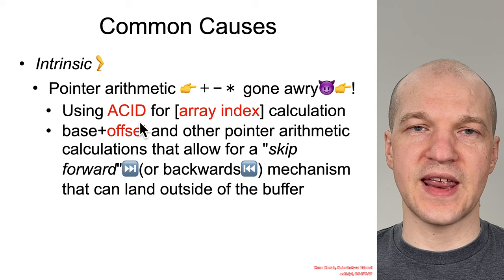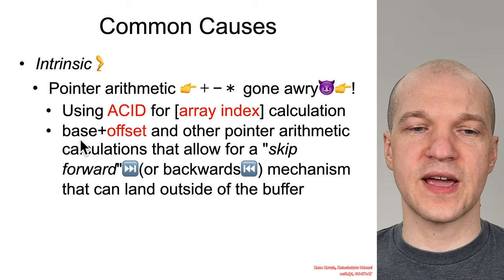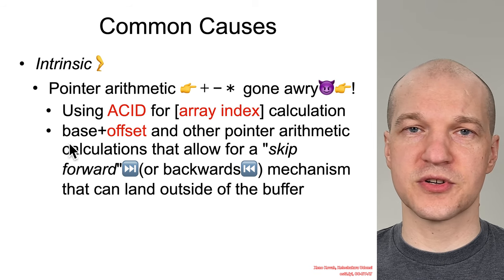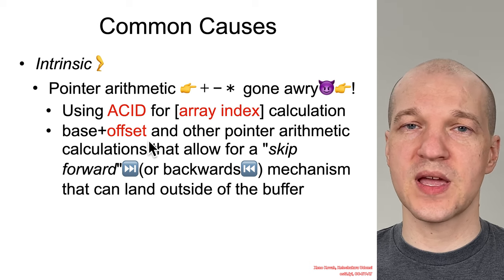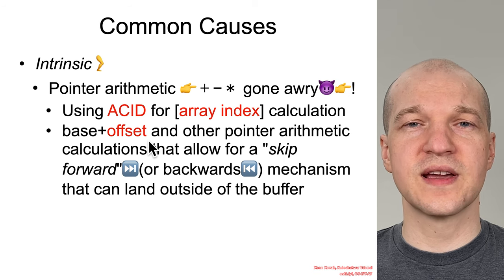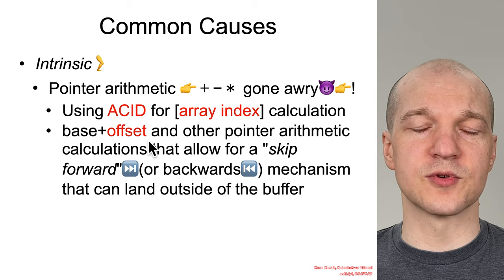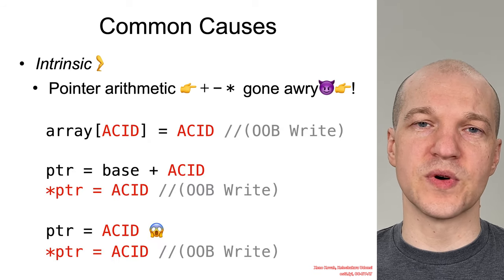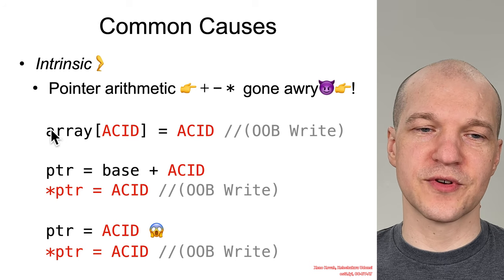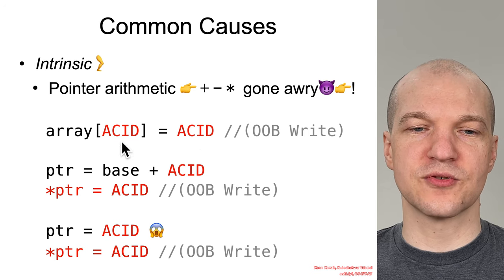For instance, using an attacker-controlled value as an array index if you're dealing with a proper array buffer. On the other hand, if you have something a little more complicated in terms of data structure than just a linear array, you might be accessing it via a base plus offset mechanism. But if that offset is ultimately attacker-controlled, that can allow them to skip forward or even skip backwards through the intended memory locations, ultimately landing outside of the bounds of the buffer and causing a write to occur. In source code terms, think of array[attacker_index] = attacker_value — if the index is attacker-controlled, that's an out-of-bound write.